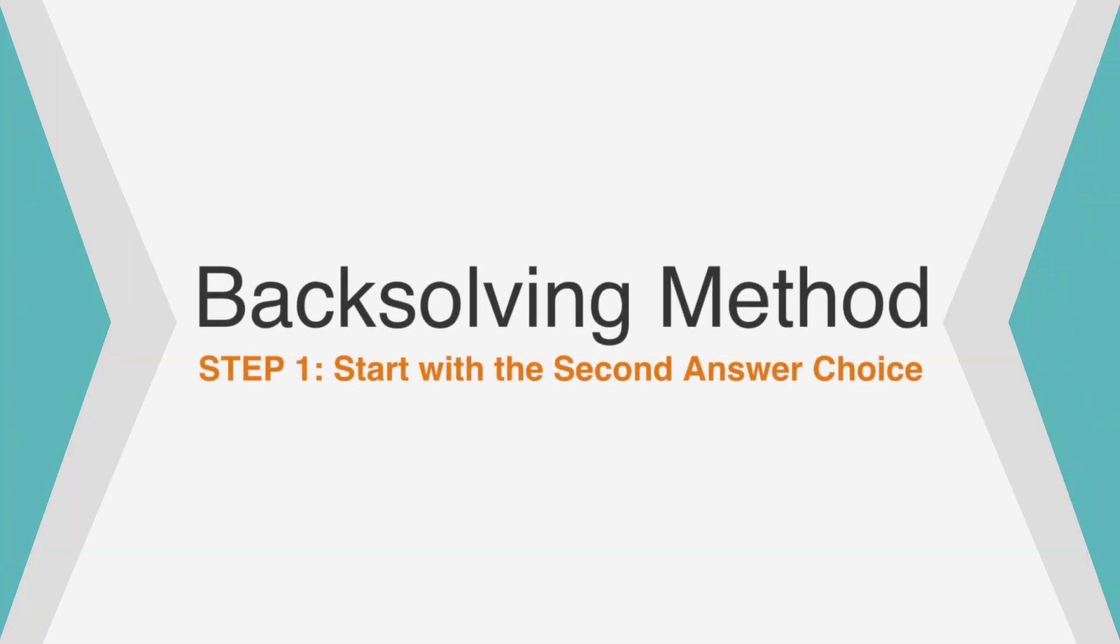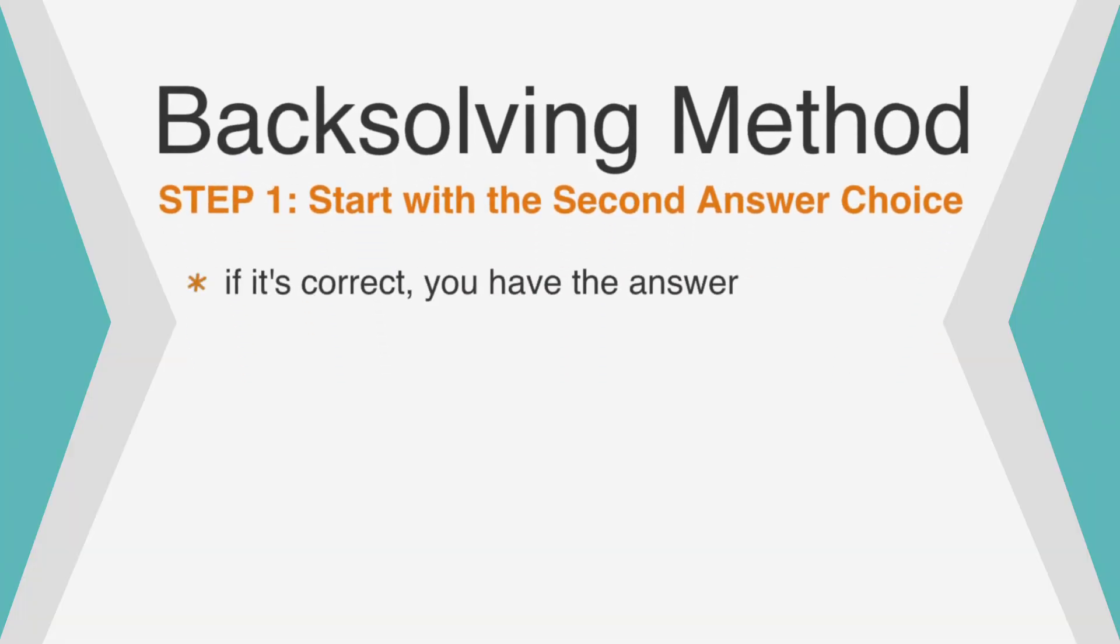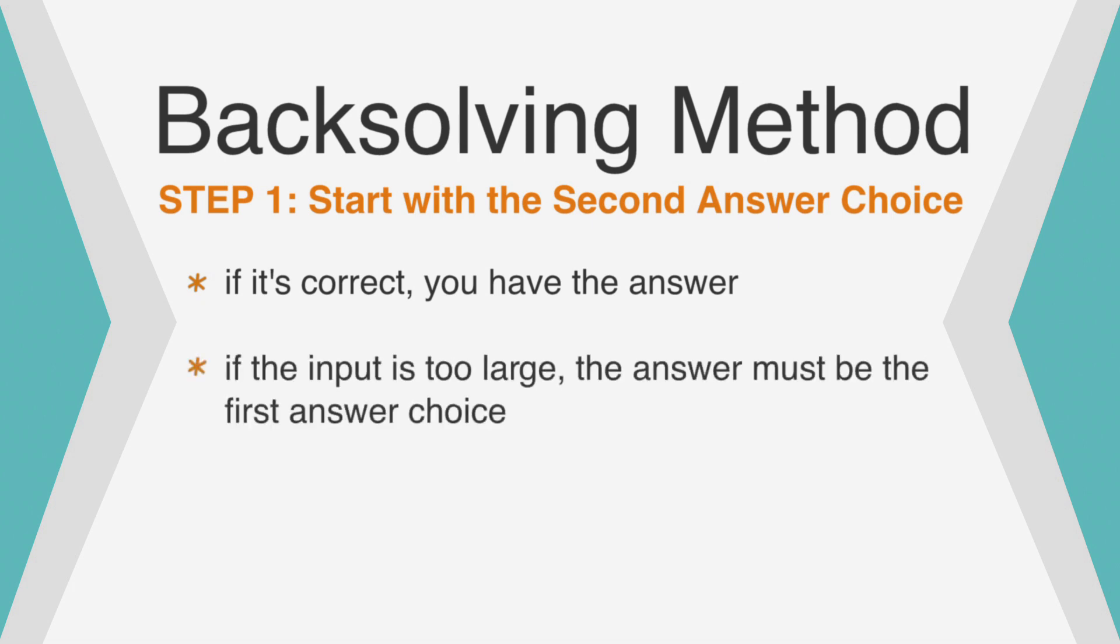Step 1 is to start with the second answer choice. If it's correct, you have the answer. If the input is too large, the answer must be the first answer choice, because the first answer choice is smaller.